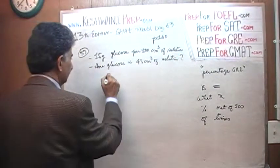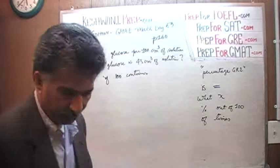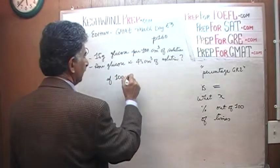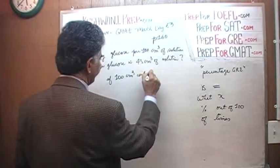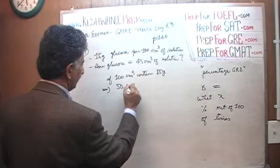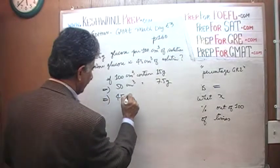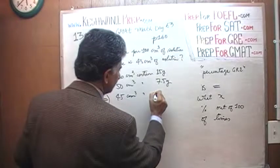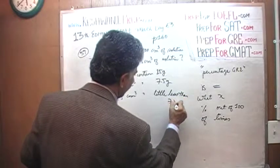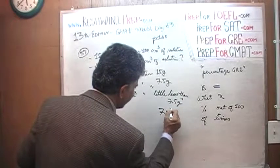The first thing we have to realize is that if 100 cubic centimeters contains 15 grams, that implies that 50 cubic centimeters will contain 7.5 grams. That also implies that 45 cubic centimeters would have a little less than 7.5 grams. Now in the exam, I would not write it like 'little less than 7.5'. This is how we write it: 7.5 with a minus sign on top of it.